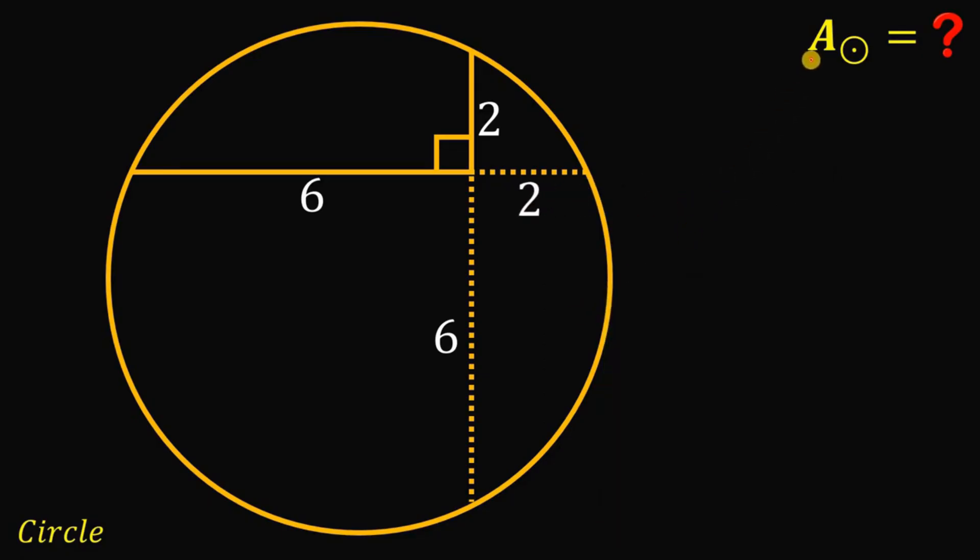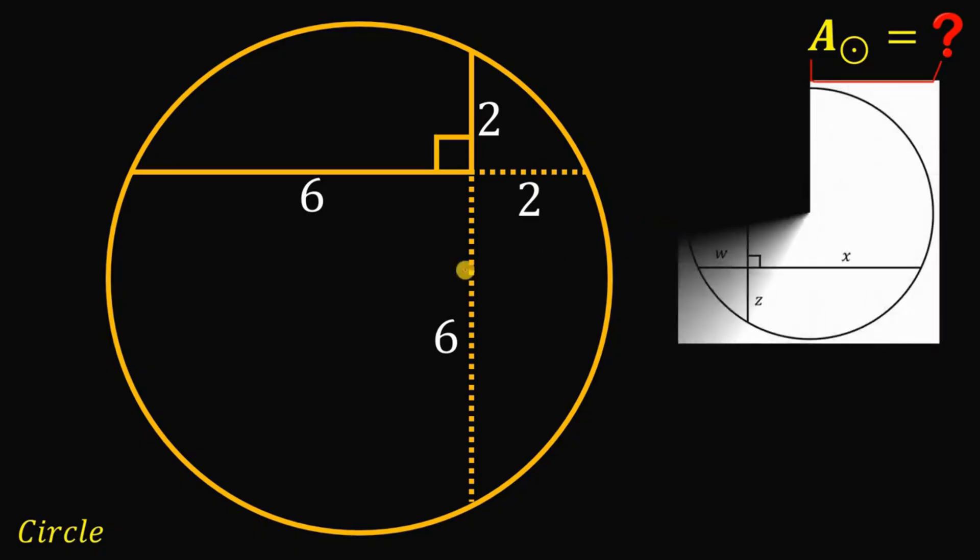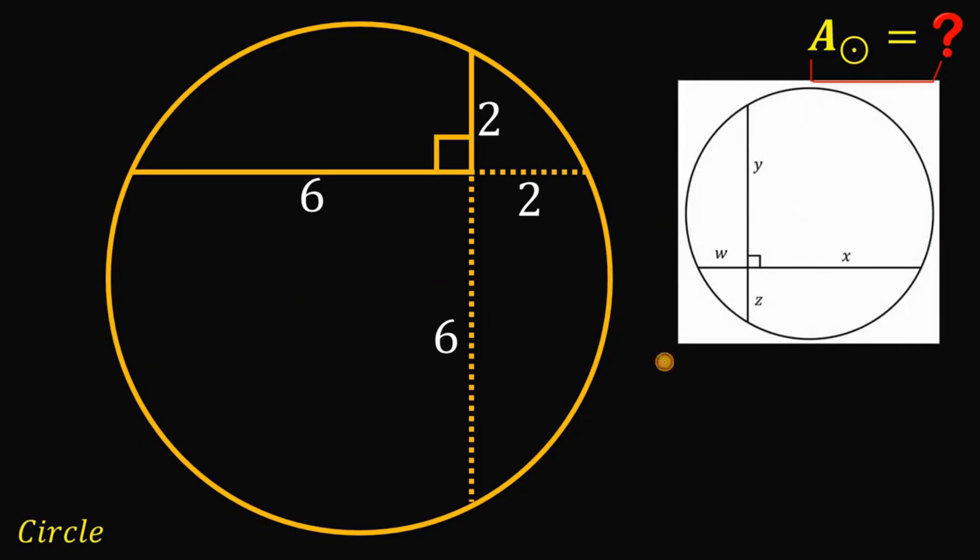Now, from here, we can now solve for the area of the circle because we can now solve for the value of r squared because we will use this theorem that relates the radius squared and these four segments.